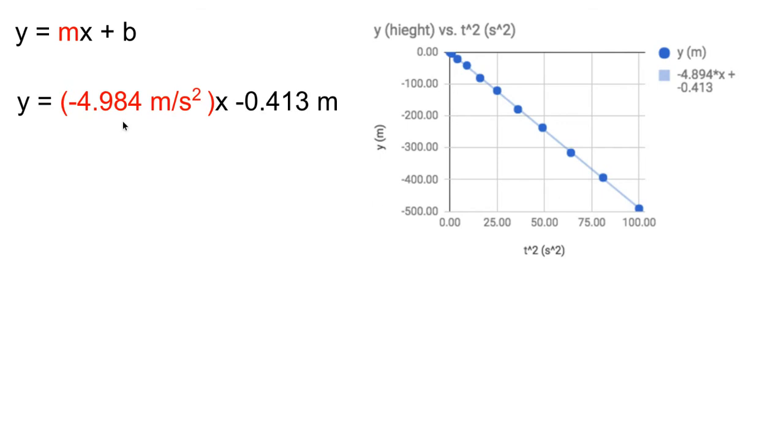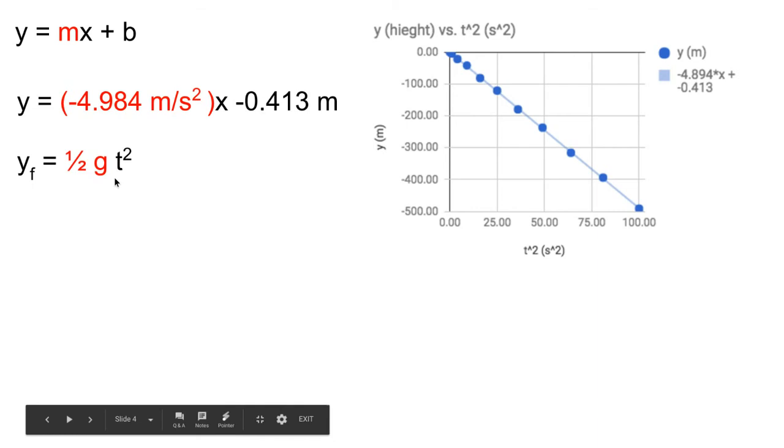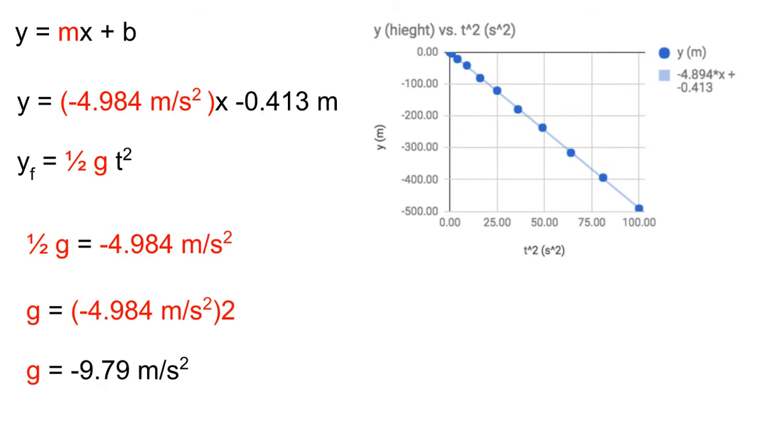That slope is m. That m is one-half g. So if we make these equal to each other, do a little algebra, you will find that you can determine your gravitational acceleration. In this case, for this data, negative 9.79. The negative is just due to a downward direction.